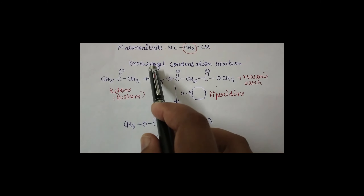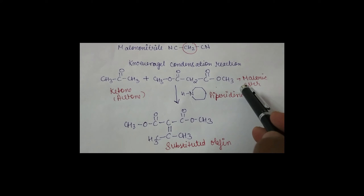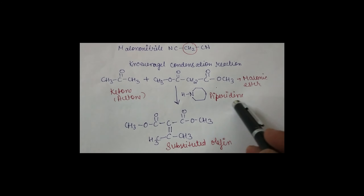This is the general Knoevenagel condensation reaction, where acetone reacts with malonic ester in the presence of piperidine, which acts as a base, to obtain a substituted olefin as a product. The ketone is the carbonyl compound, and malonic ester with its CH2 group is the activated methylene compound. The ester group is COOCH3 and piperidine acts as the base.